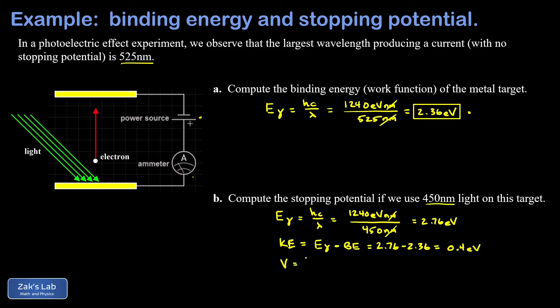Now the stopping potential just has to be sufficient to absorb all that kinetic energy by the time the electron gets to the other side. So the stopping potential is just the same number: it's 0.4 volts. This means the electron will gain 0.4 electron volts of potential energy on its way toward the opposite plate, driving the kinetic energy down to zero, and it will stop before it arrives at the other side.